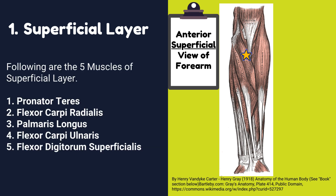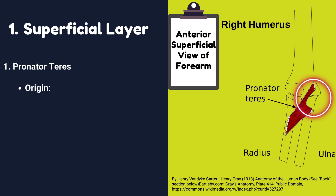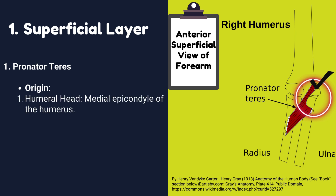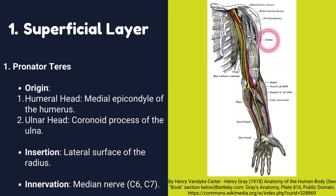Number one: Pronator teres muscle. Origin: it has two heads. Humeral head originates from the medial epicondyle of the humerus. Ulnar head originates from the coronoid process of the ulna. Insertion: it is inserted into the lateral surface of the radius. Innervation: it is innervated by the median nerve.